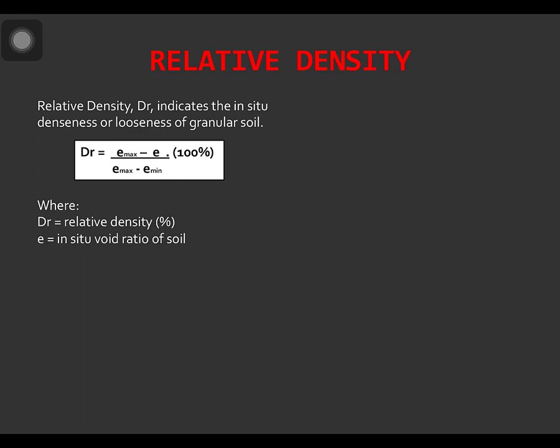e is the in-situ void ratio of soil, emax is the void ratio of the soil in loosest condition, emin is the void ratio of the soil in the densest condition. By using the definition of the dry unit weight,